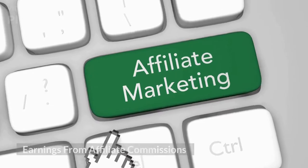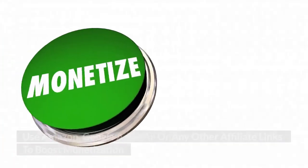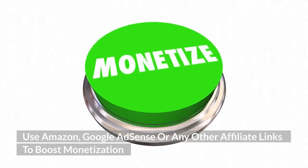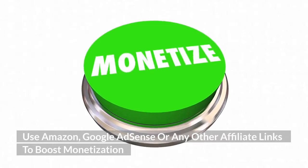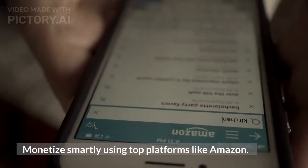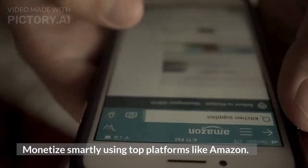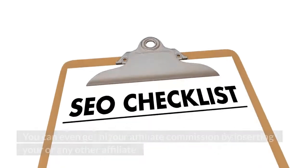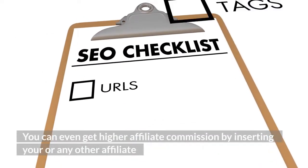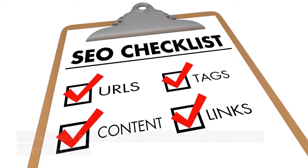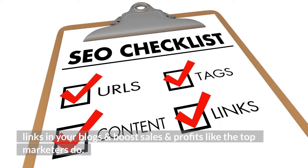Earnings from affiliate commissions — use Amazon, Google AdSense or any other affiliate links to boost monetization. Monetize smartly using top platforms like Amazon, Google AdSense, etc. You can even get higher affiliate commission by inserting your or any other affiliate links in your blogs and boost sales and profits like the top marketers do.